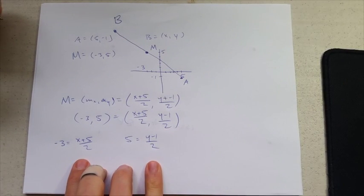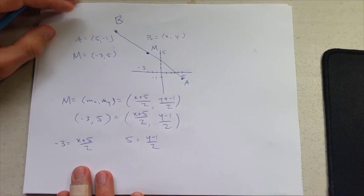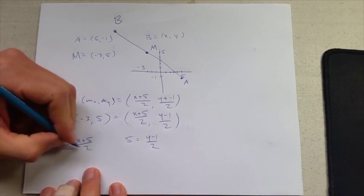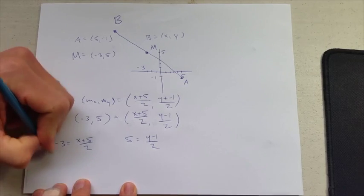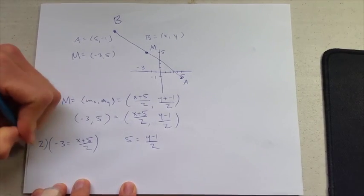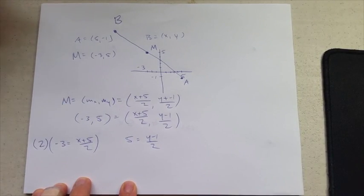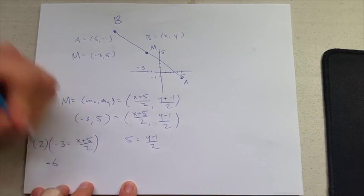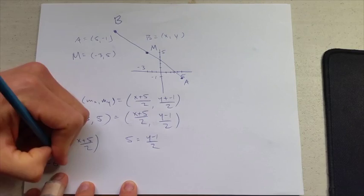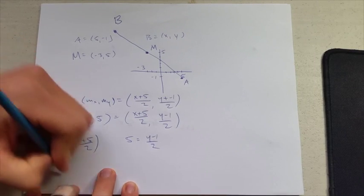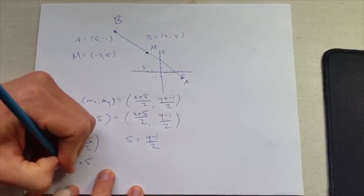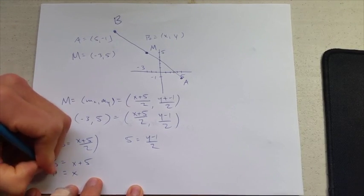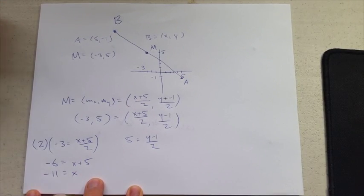Now we have two separate algebra equations—these are just basic algebra here. We're going to multiply by 2 as our first step. So 2 times -3 is -6, equals—the 2 cancels the half—x plus 5. Subtract 5: -6 minus 5 is -11. There's our x coordinate.